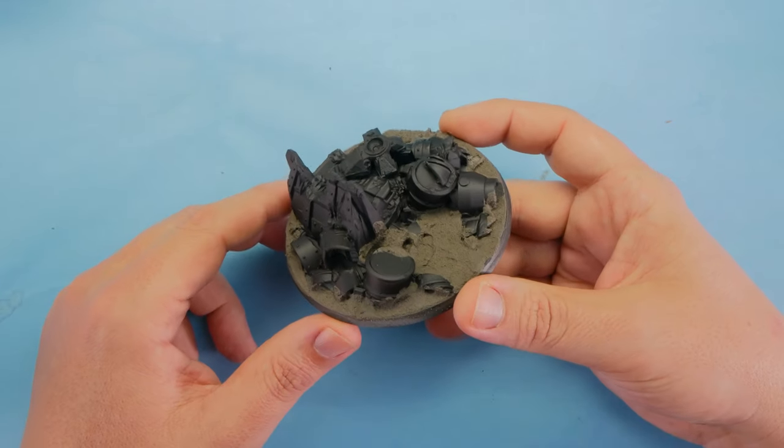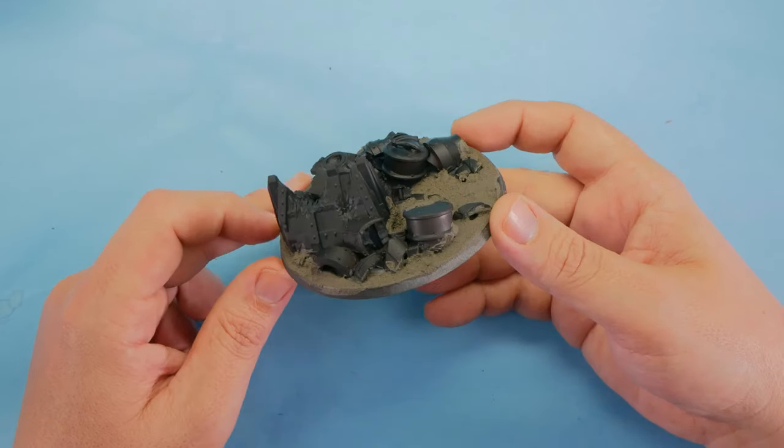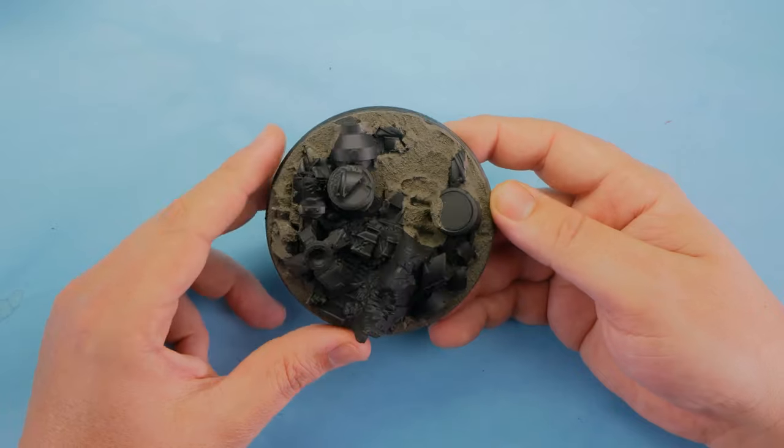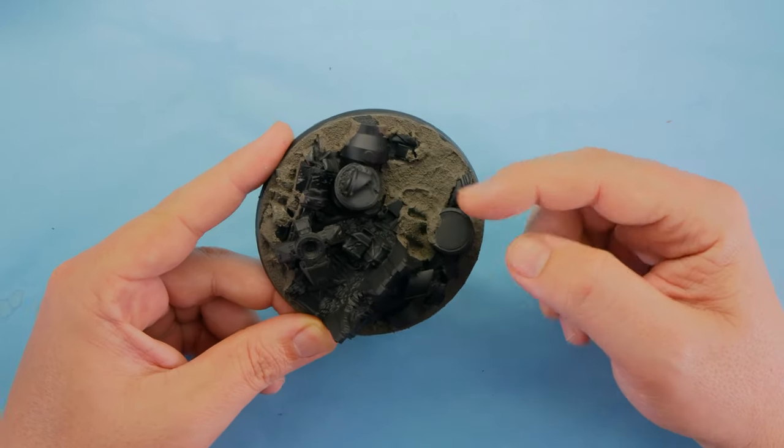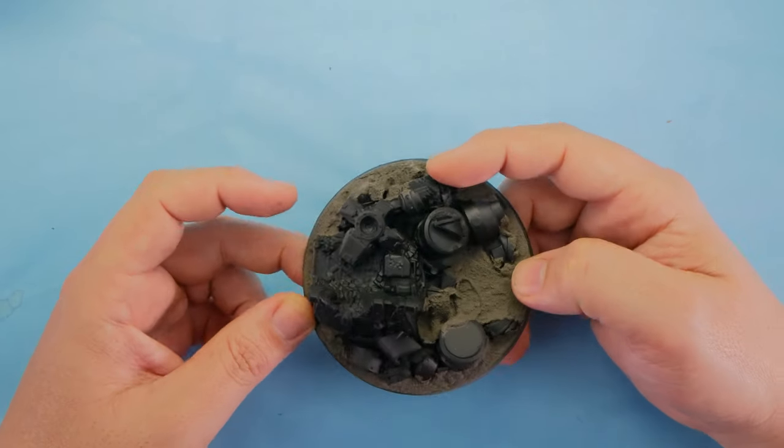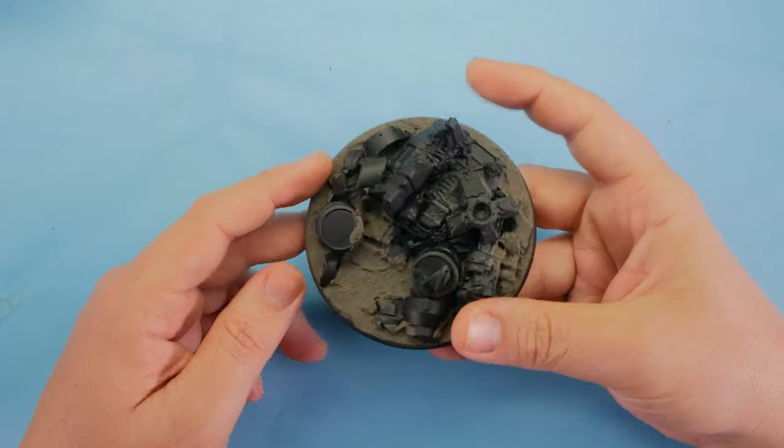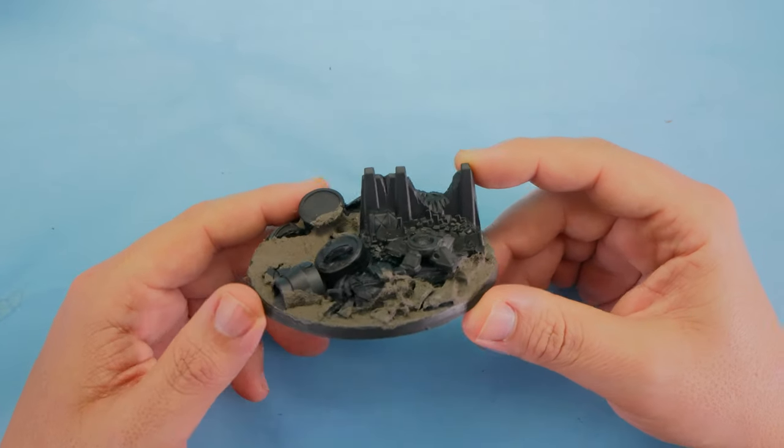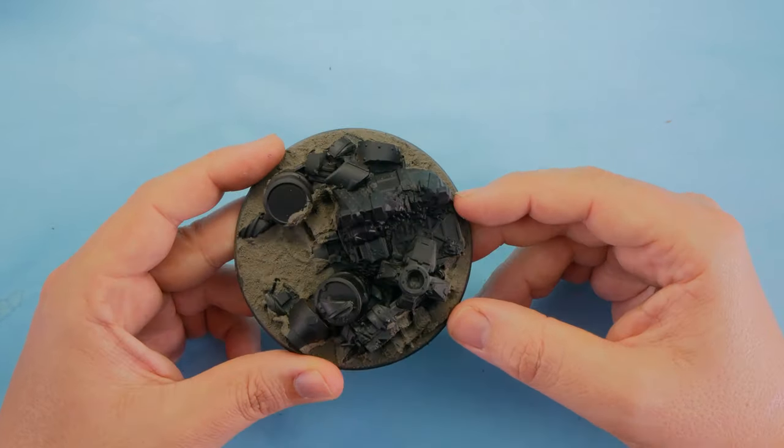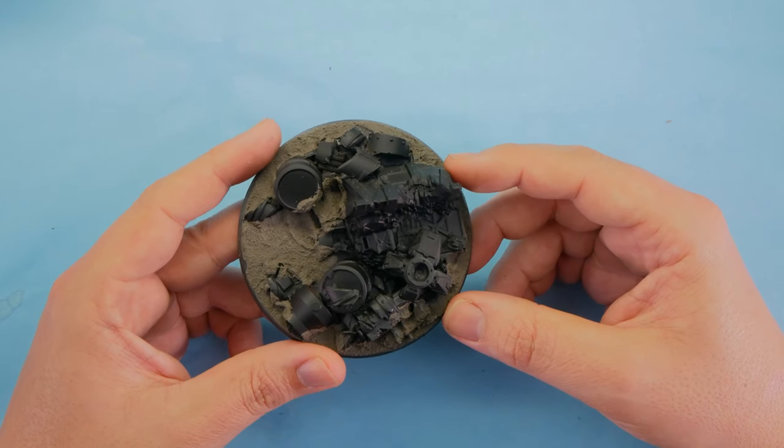Just to show you this finished example here, this is a Redemptor Dreadnought base we're working on for a Raven Guard project. On this base we've used all sorts of spares, including some leftover barrels, some discarded weapons, and then we've got this piece from a bulwark, sort of a defensive position from a hero base in the Warhammer 40K range.